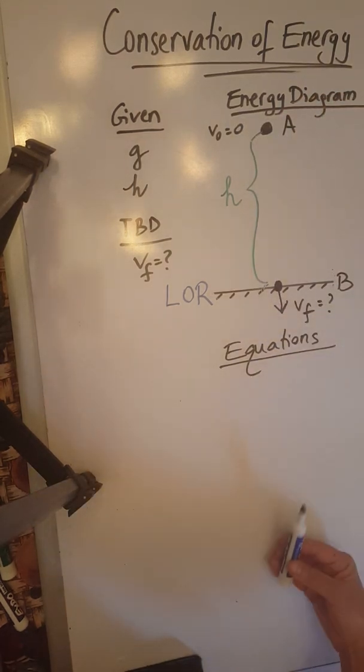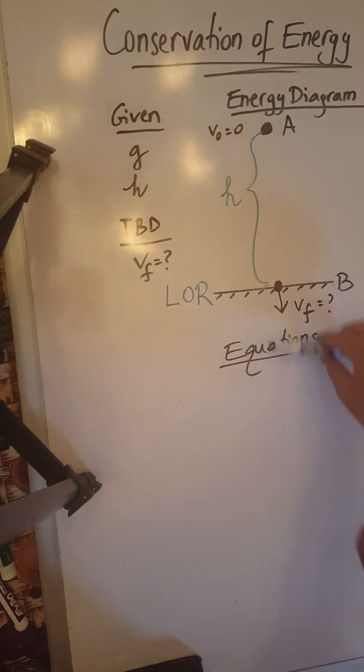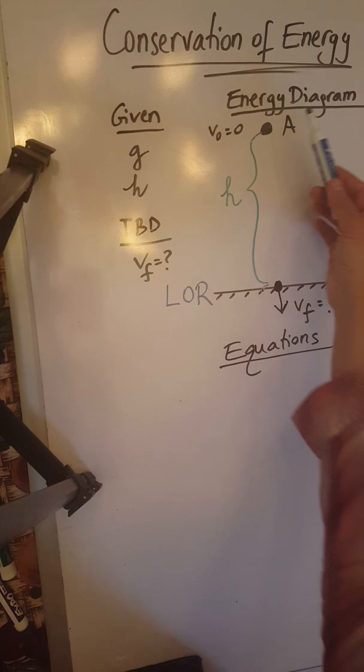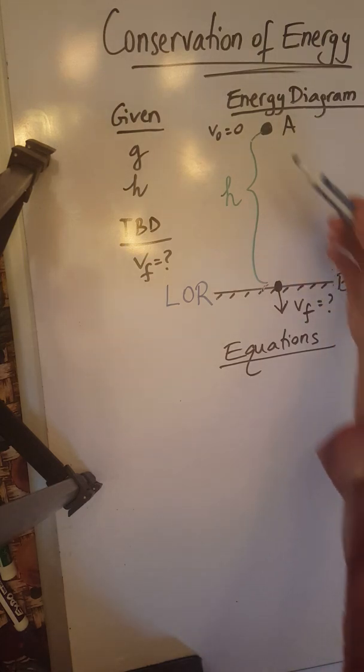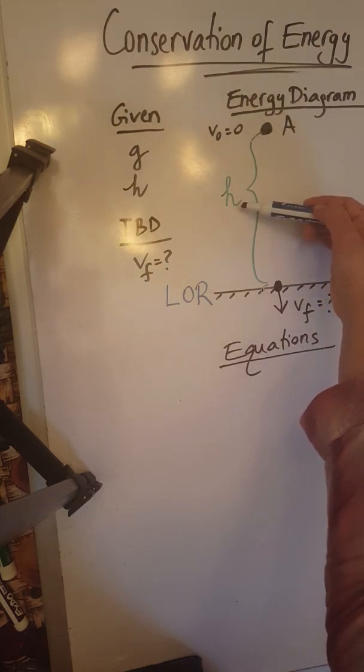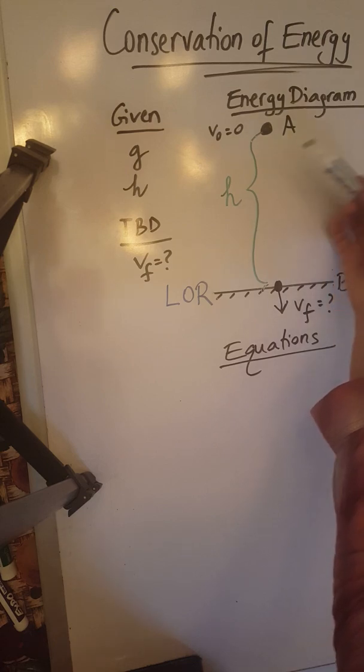Obviously any point below the ground would have too, but we don't care about what's happening below the ground. So therefore at point A the object will have potential energy because point A is at a distance H above the level of reference.